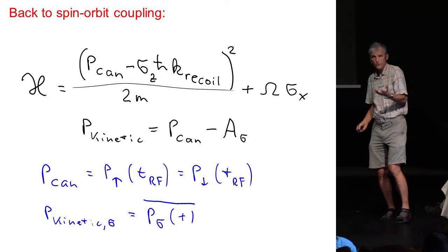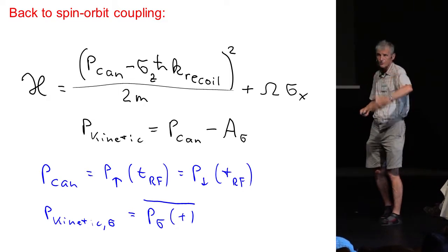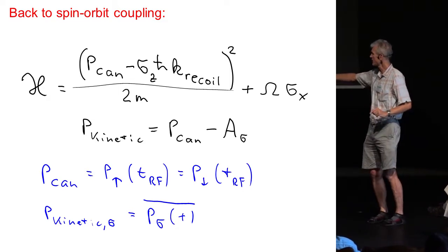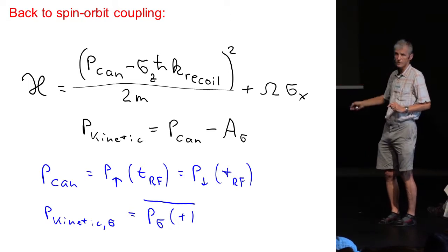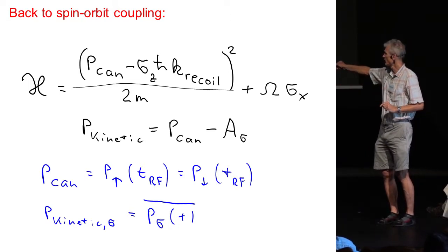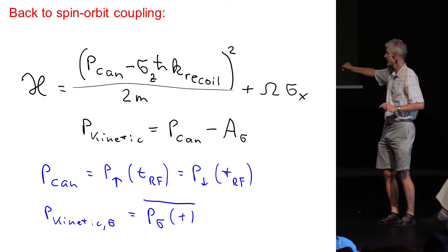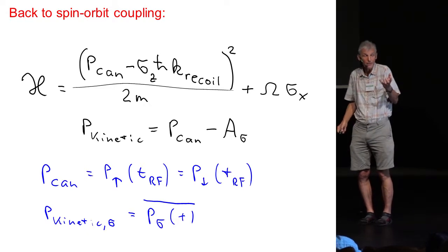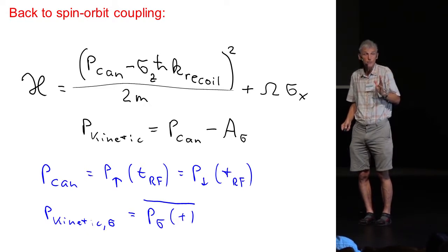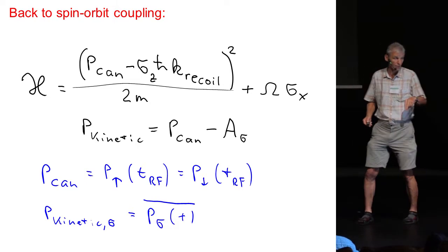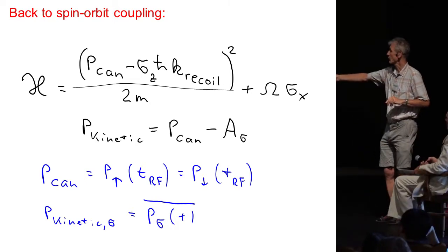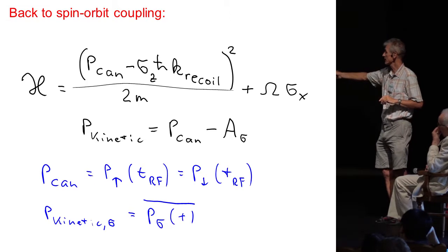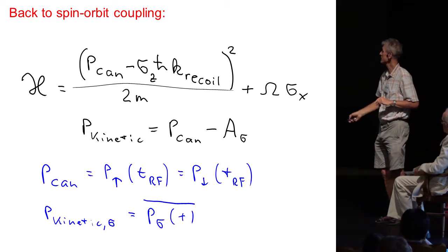And this is useful. There is always a reason why you introduce canonical momentum. And canonical momentum is useful because the momentum at the moment of the RF transfer, of course, has to be the same for spin-up and spin-down, because the RF has no momentum and couples two momentum states in spin-up and spin-down which are equal.